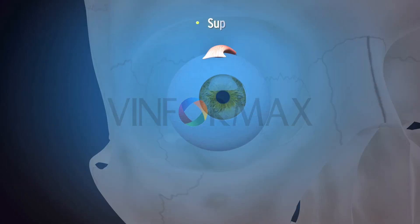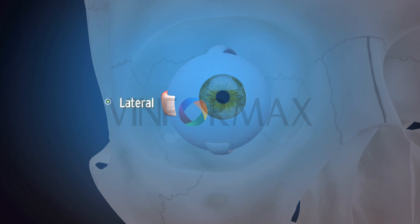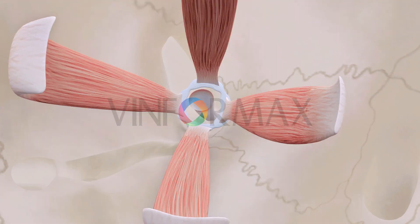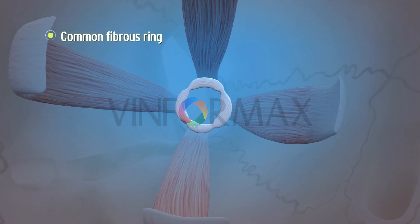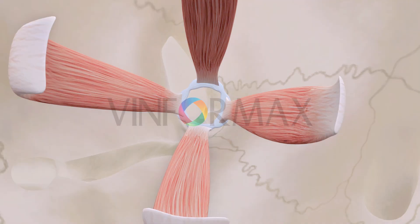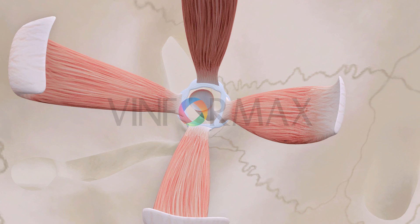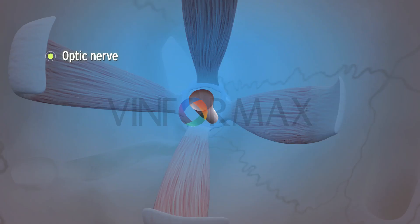The recti muscles include the superior, inferior, lateral, and medial recti. All recti take origin from the common fibrous ring — the tendon of Zinn — which encircles the optic foramen and the adjacent part of the superior orbital fissure. The recti muscles run forwards, encircling the optic nerve and then the eyeball.